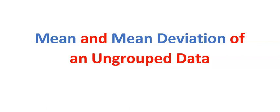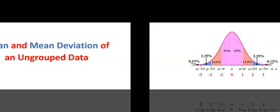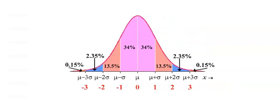In this video, we consider the calculations of mean and mean deviation of ungrouped data. Mean is simply the average of numbers, while mean deviation is simply how far away each number is from the mean.